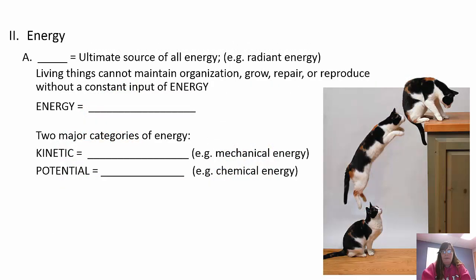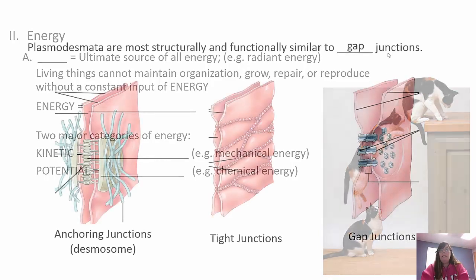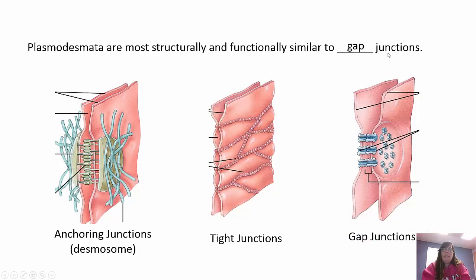Plasmodesmata are functionally and structurally similar to gap junctions in that they're always open - plasmodesmata in plants and gap junctions in animals are always open - and molecules and ions can pass through readily.